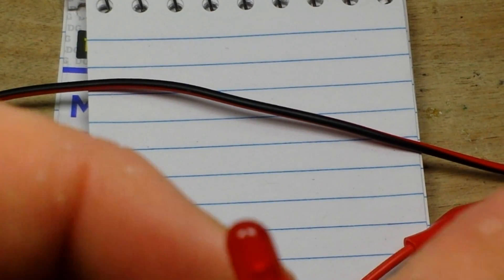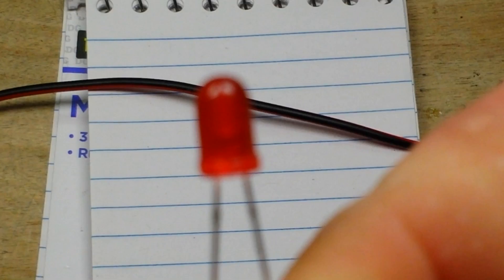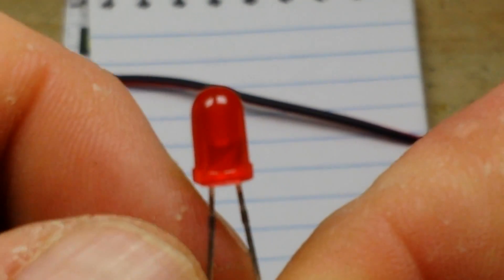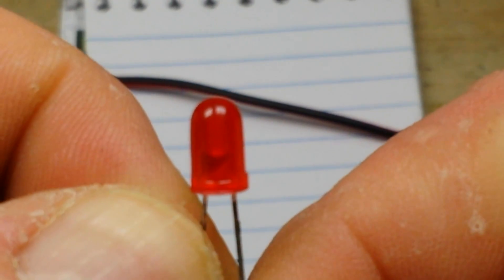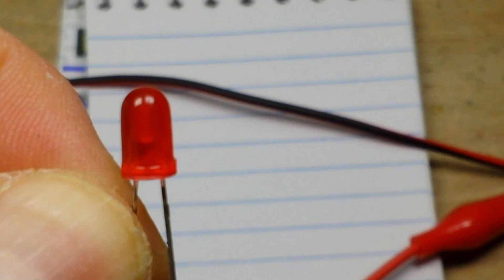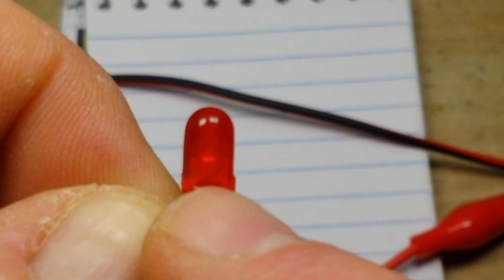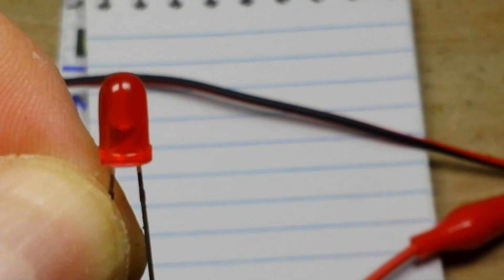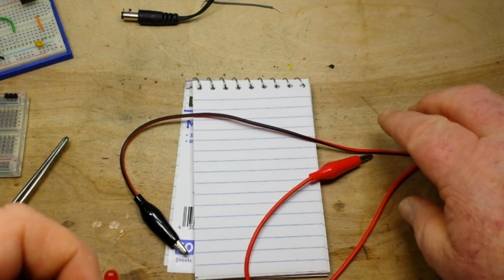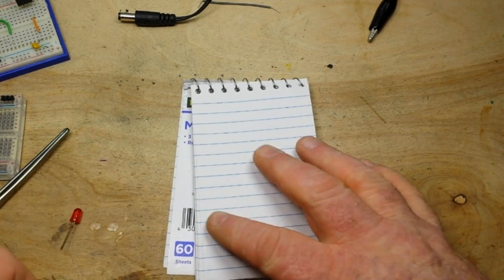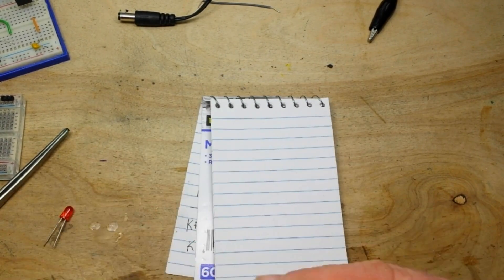Now I promised I would tell you another way to tell your LEDs what side is which. If you look in there, see the big side? Then you can see over here, there's a little side. Tell you what, let me draw it. It might make it easier for you.